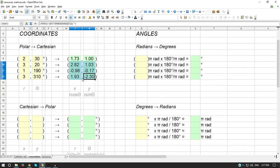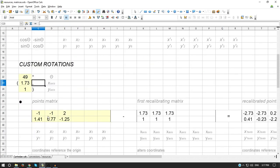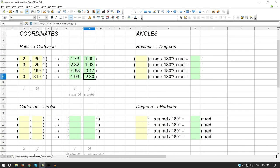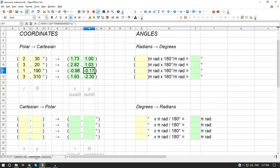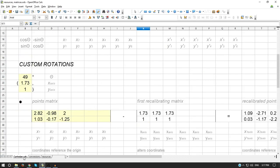Now, our points are going to be these. So 2.82 and 1.03, negative 0.98 and negative 0.17, and 1.93 and negative 2.3. I'm just going to double check real quick. Oh, that should be negative.